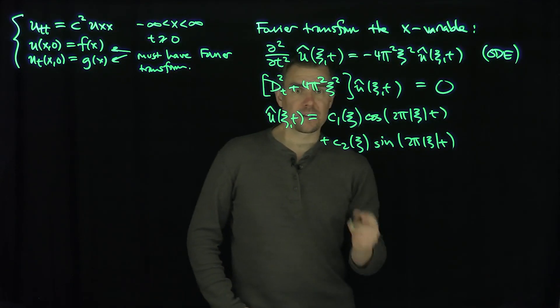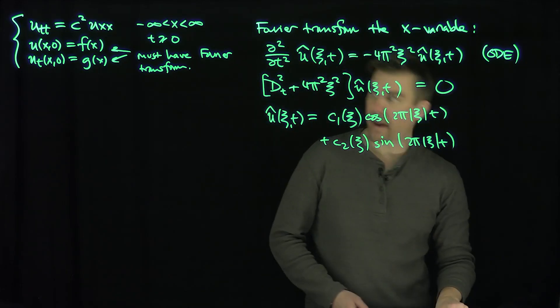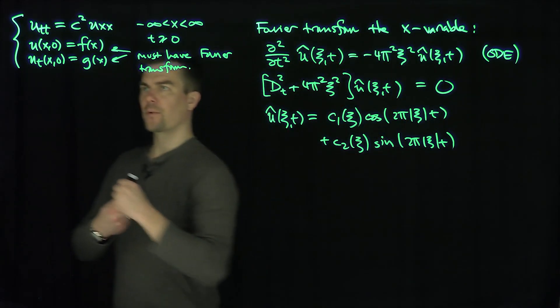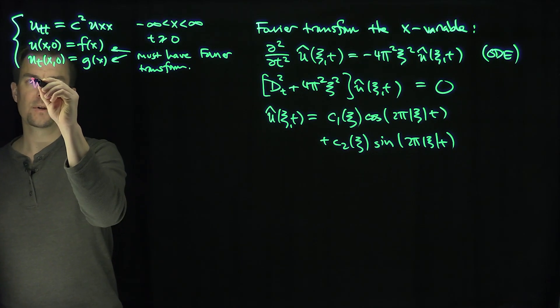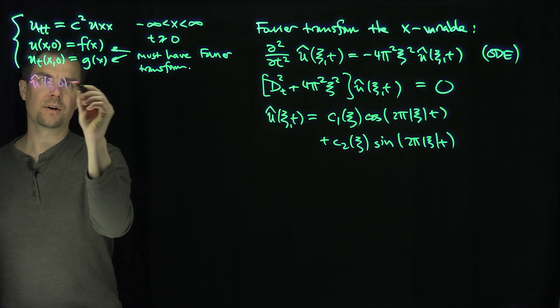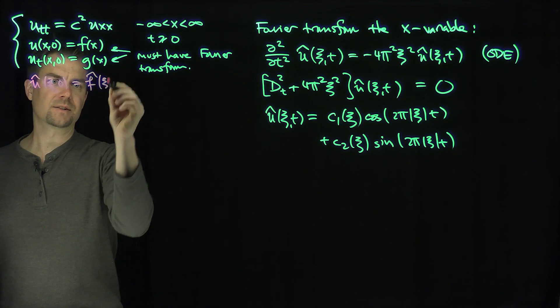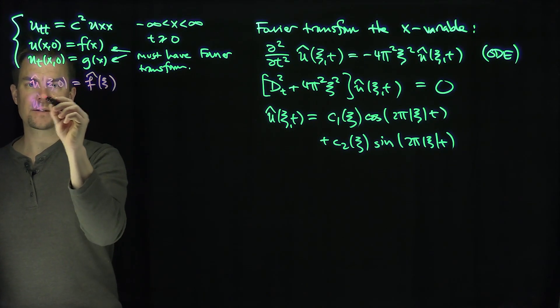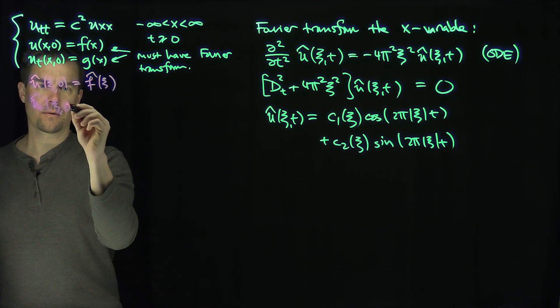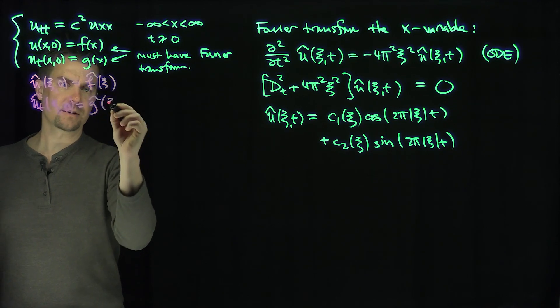And so now, of course, I'd like to find out what these c1 and c2 are. So of course, if I plug in, so now by assumption, those functions have Fourier transforms. So I know that U hat of xc zero is equal to F hat of xc, and UT hat xc zero is G hat xc.